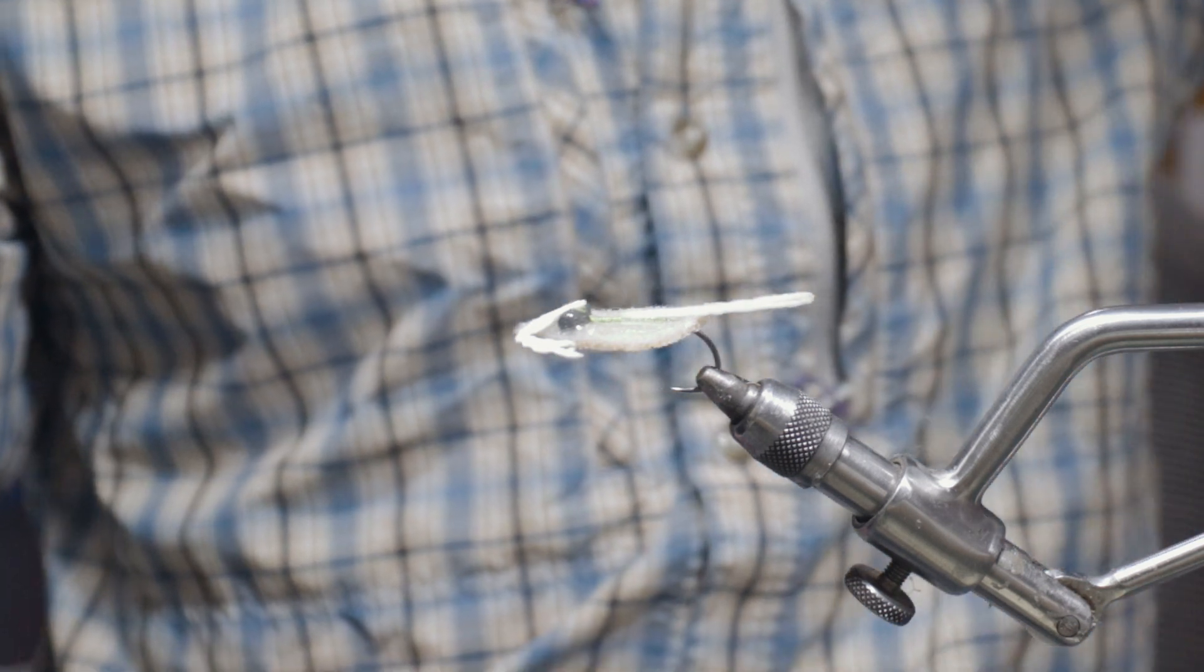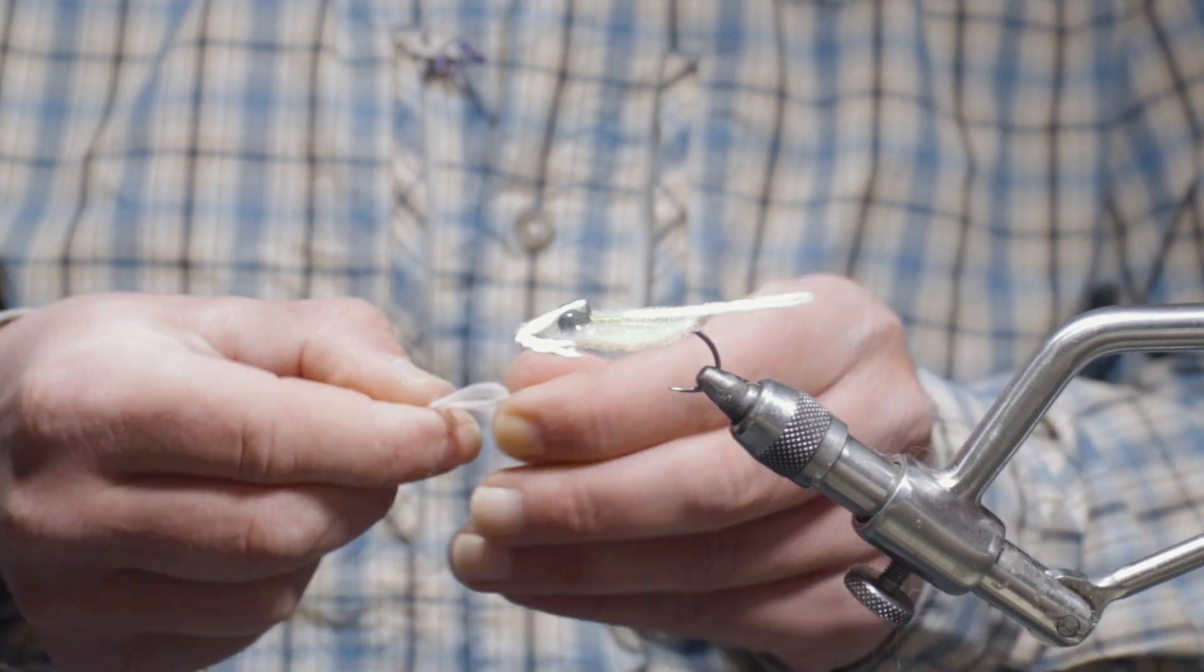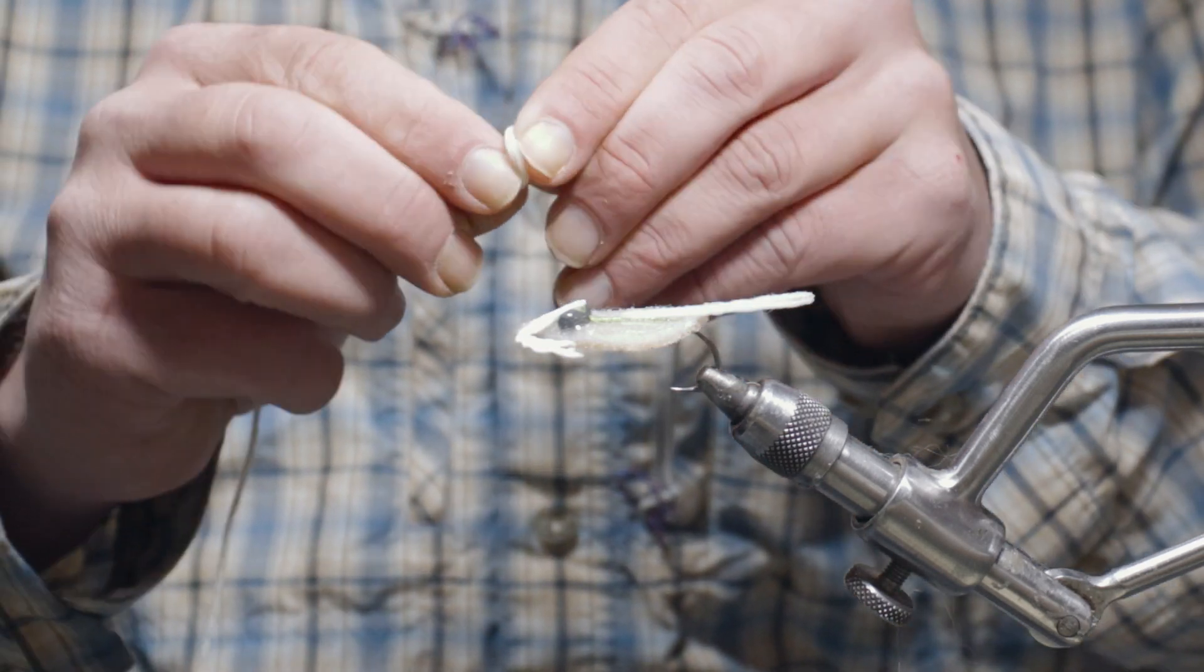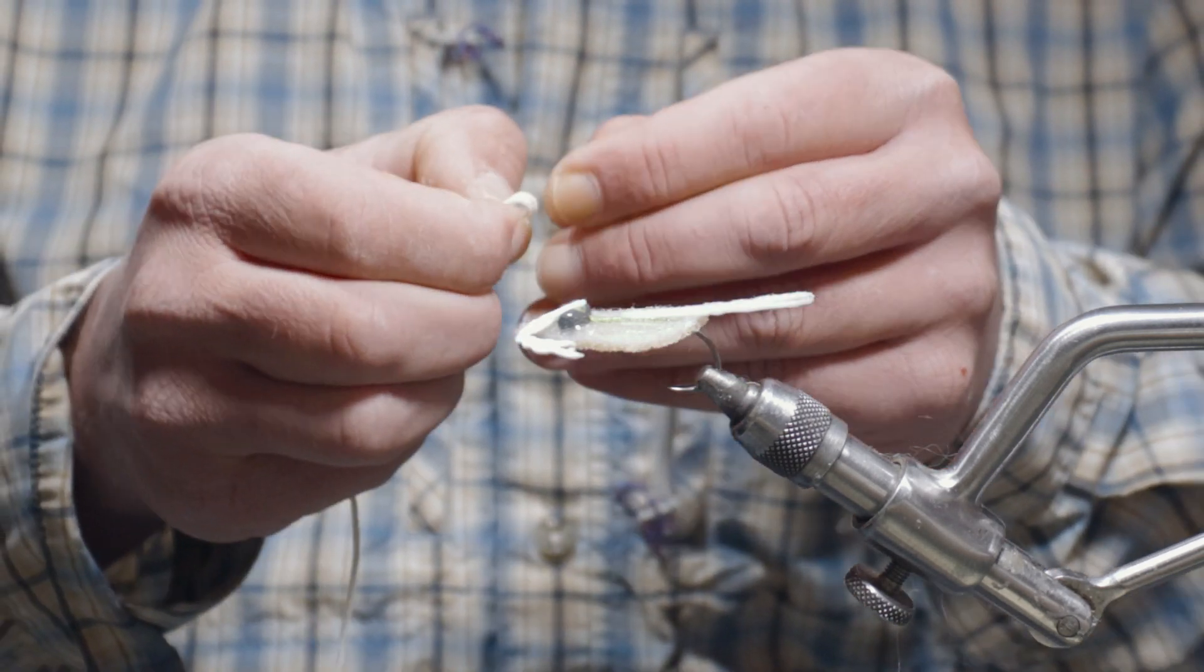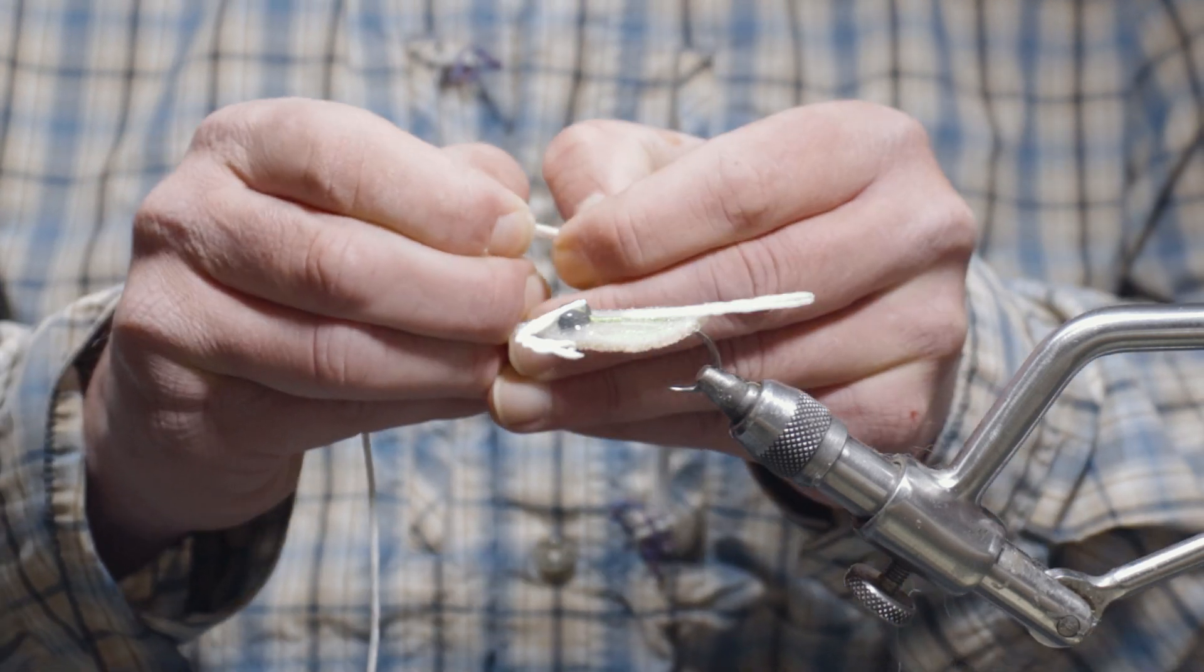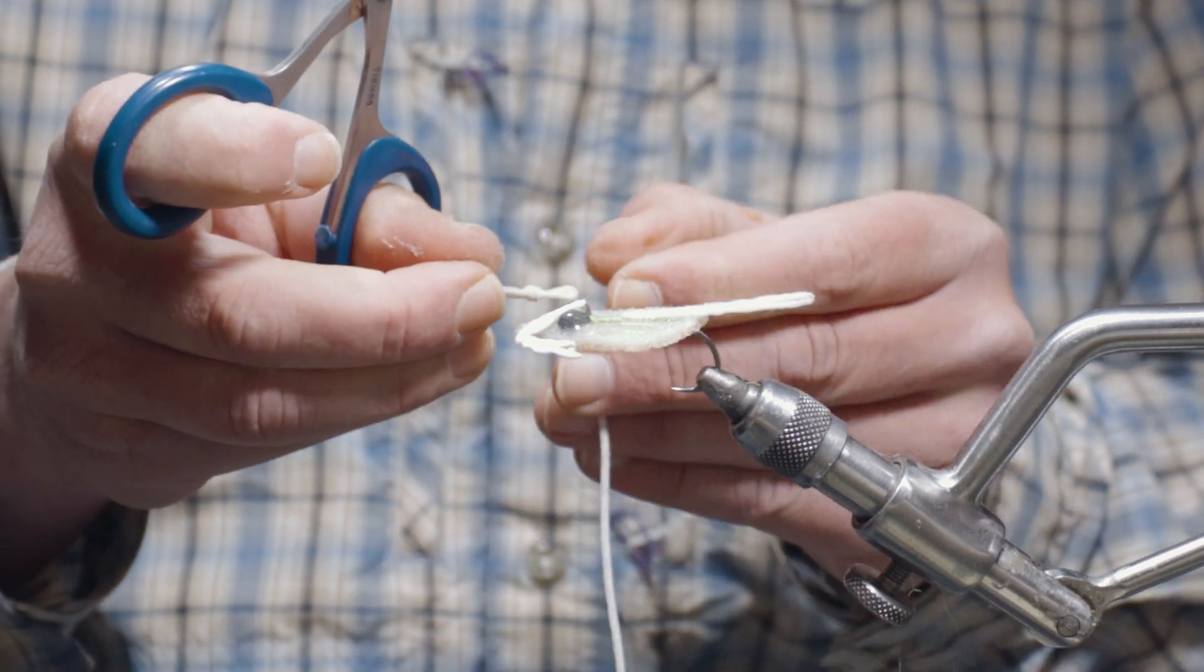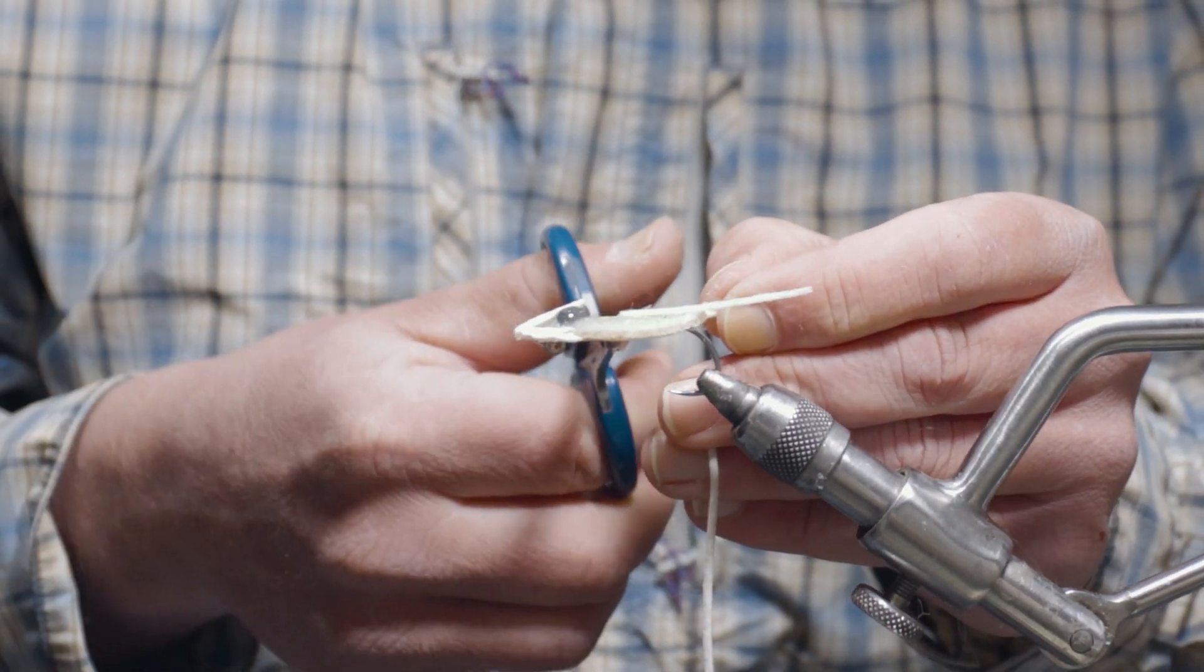And then we're going to take some ultra chenille, micro ultra chenille, and do a pair of knotted legs. These are going to be the little paddle legs on the back of the blue crab. Lay those guys in.